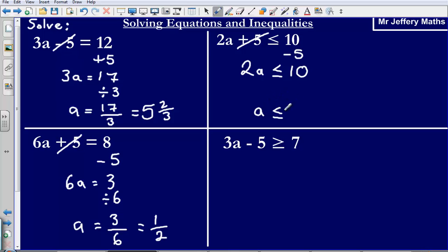Then in order to find out what A is less than or equal to I simply divide by the number in front of the letter 2. So I get 10 divided by 2 and so that gives me an answer of 5. So I can say that A is less than or equal to 5.